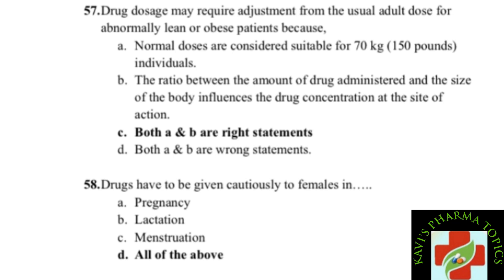Next question: drugs have to be given cautiously to females in pregnancy, lactation, or menstruation, or all of the above. The correct answer is all of the above — drugs must be given cautiously to females in pregnancy, lactation, and menstruation.